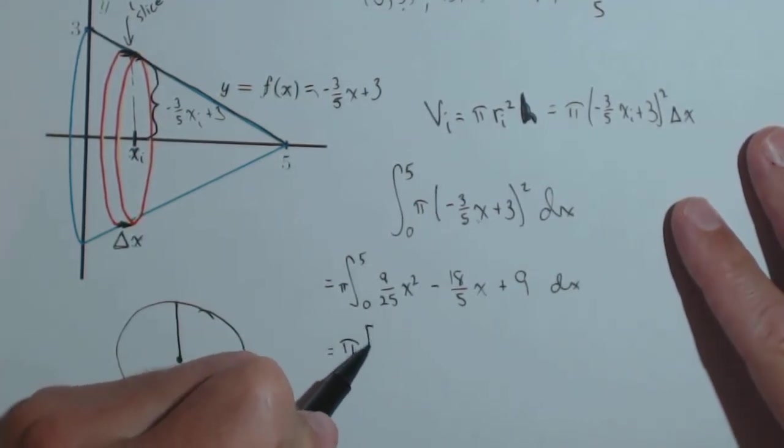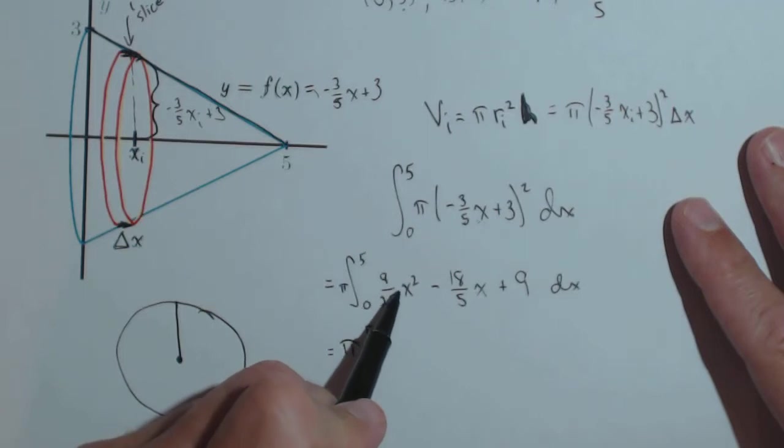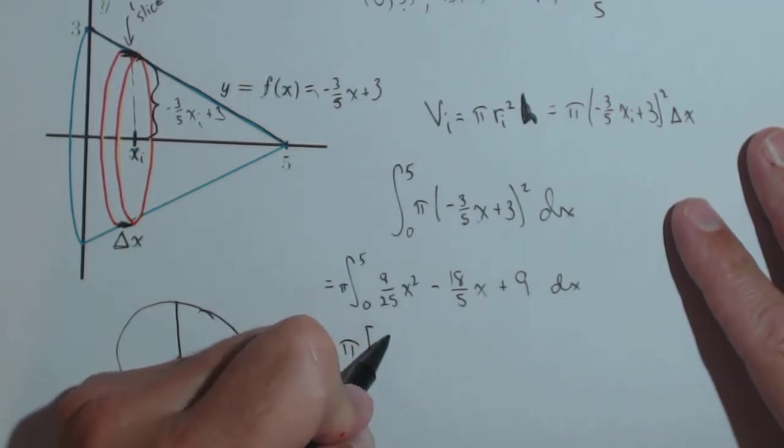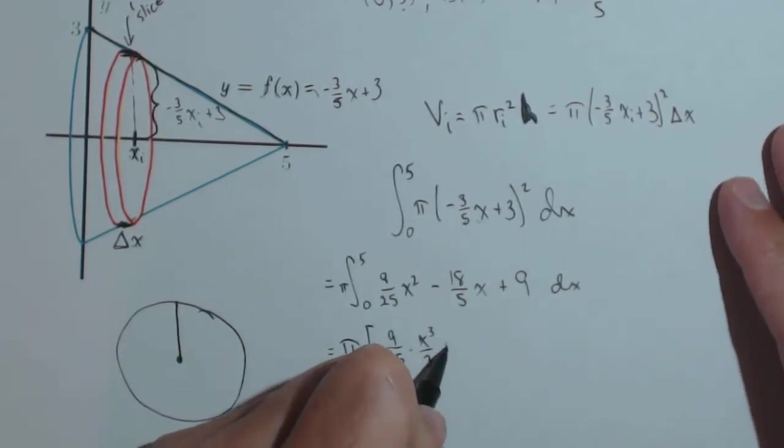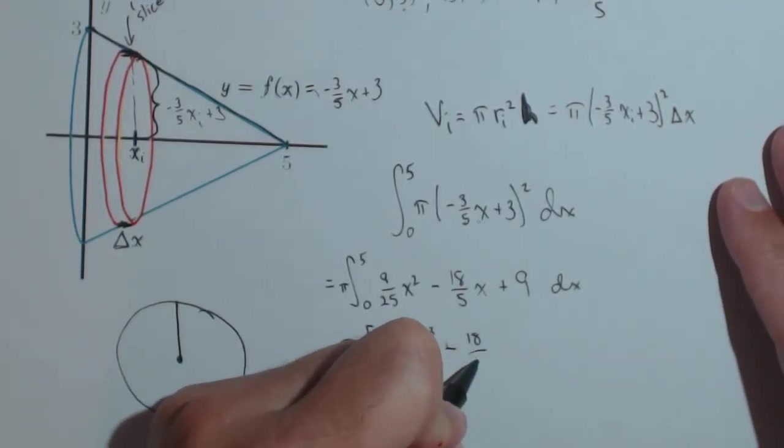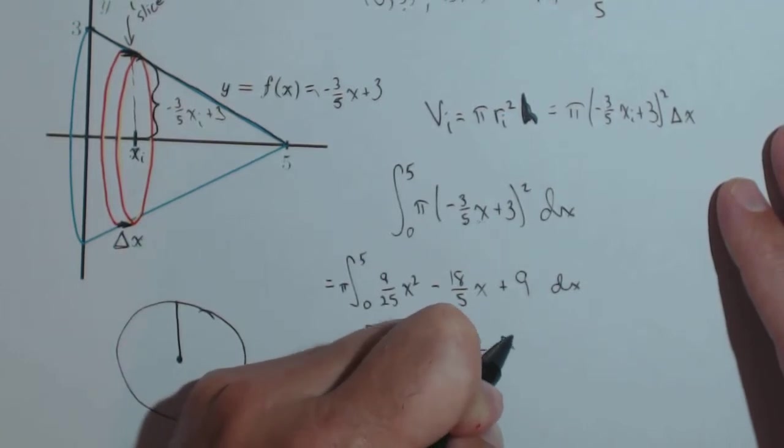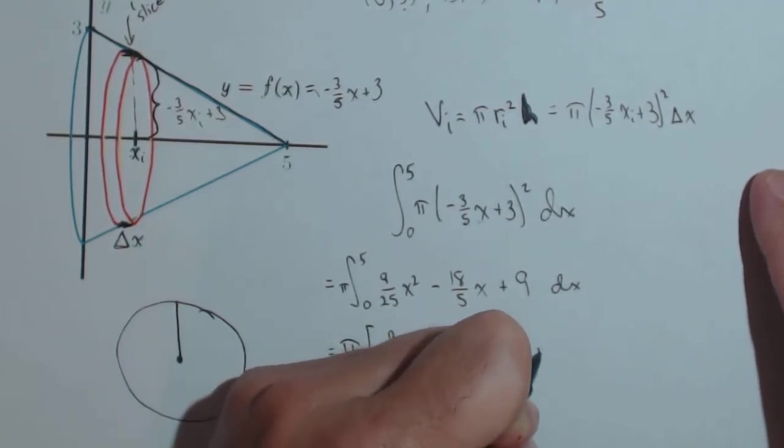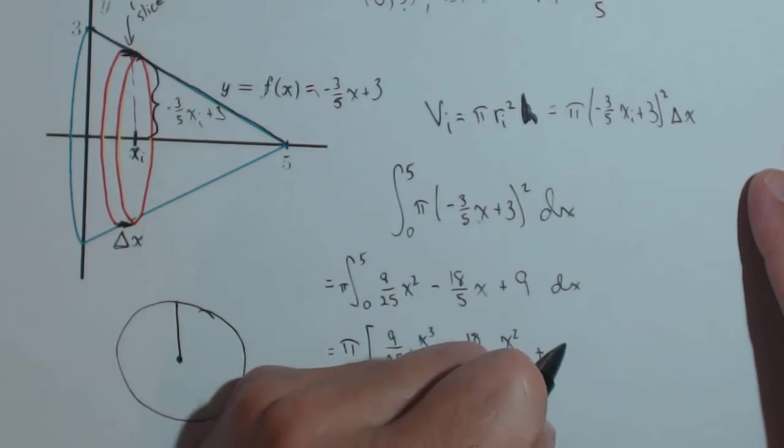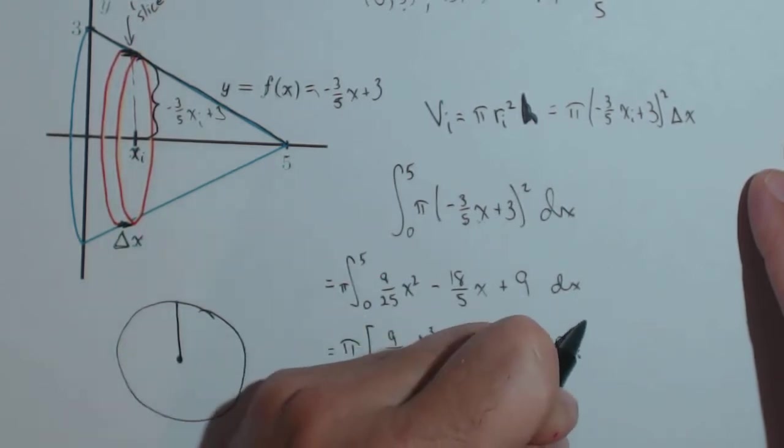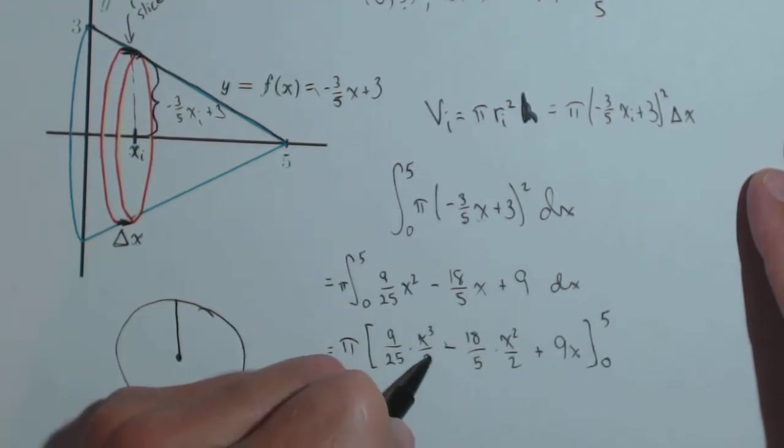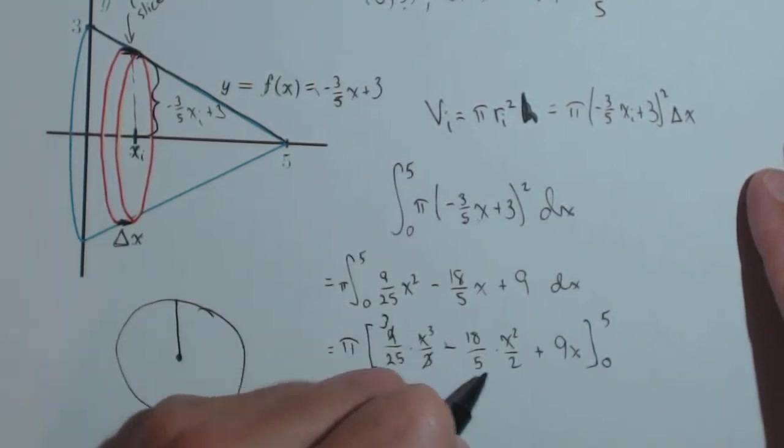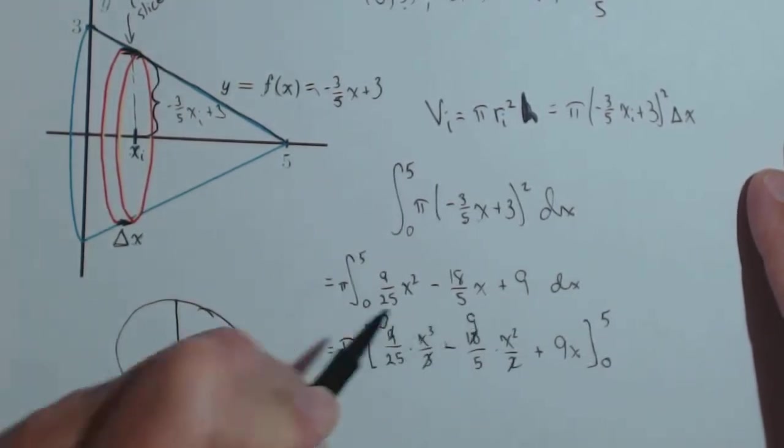Let's take our anti-derivatives. This here is going to be 9/25 times x³/3. We'll be able to do some reducing. Minus 18/5 times x²/2. And some of you might be doing this all in one step and that's fine. I'm just writing it all out for the video. 9x, this goes from zero to five. So this will reduce that to a three. This will reduce that to a nine.